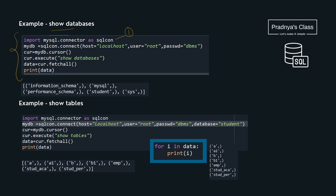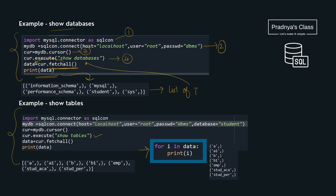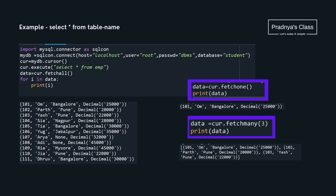Let's look at some examples. First we import the module, then create the connection, then create the cursor object. The query here is SHOW DATABASES — you will get a list of databases. Using fetchall() we store the result in a variable and print it. Look at the output — we get the database names as a list of tuples. For SHOW TABLES, the code is the same, and if you want to print the result set one by one you can use a for loop.